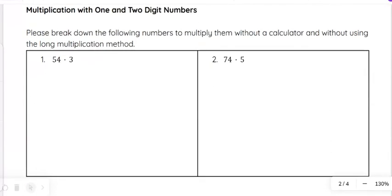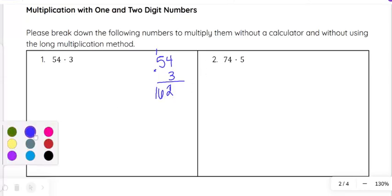We'll start with multiplication with one and two digit numbers. We're going to break these down to make it simpler without using the long multiplication method. While you can still use the long multiplication method and line up the 54 and multiply it by 3, by doing 3 times 4 you get 12, so you put a 2, carry the 1, 3 times 5 is 15, plus 1 is 16, so that's 162. You can still do that method, but let's talk about how we could get 162 without that.